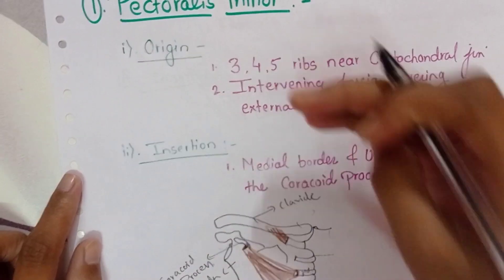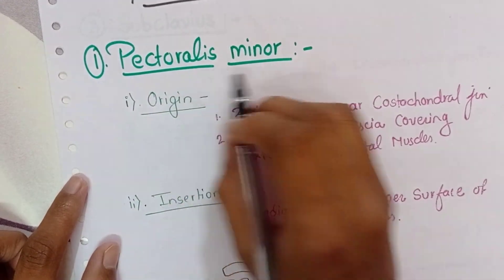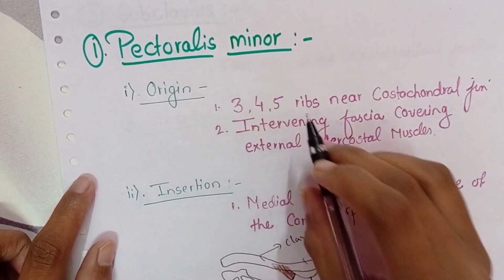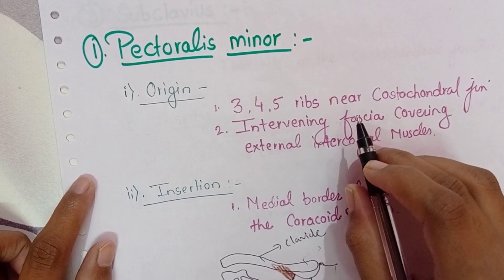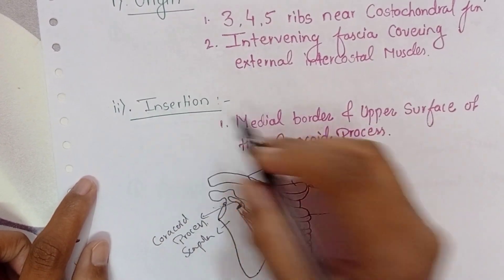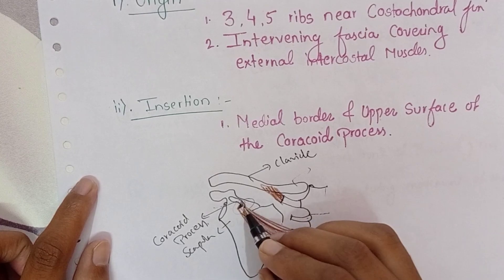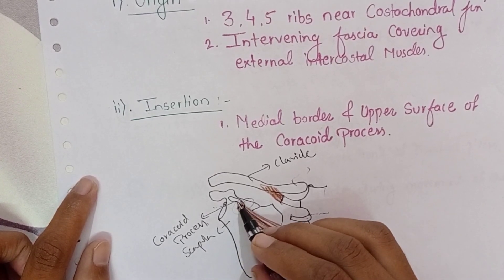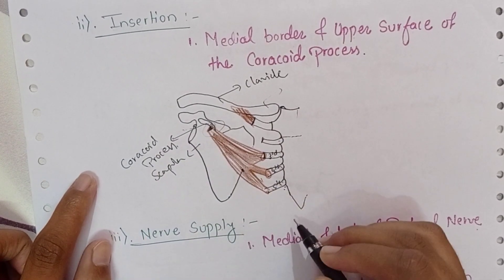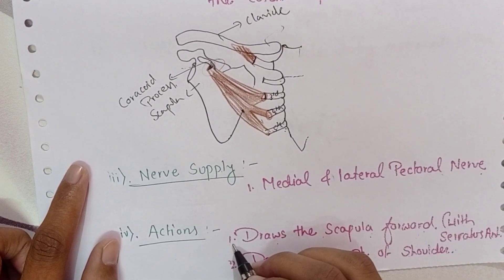Under these four headings we have studied the pectoralis minor muscle. That is, origin from the third, fourth, and fifth ribs near the costochondral junction; insertion at the coracoid process — specifically the medial border and the upper surface; nerve supply same as that of the pectoralis major; and action as described.